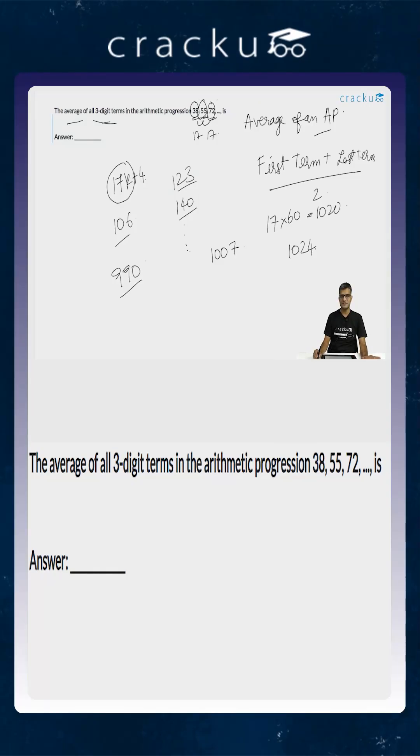The average of this arithmetic progression is the average of the first term and the last term which will be equal to 106 plus 990 divided by 2. This is equal to 1096 divided by 2 which is equal to 548. So the answer for this question is 548.